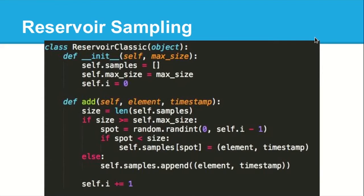Now that I've explained the concept, here's the code — it's pretty simple. If there are enough samples in the reservoir, draw a random number from zero to i minus one. If that random number is less than the size of the reservoir, you replace that random event with the new event.